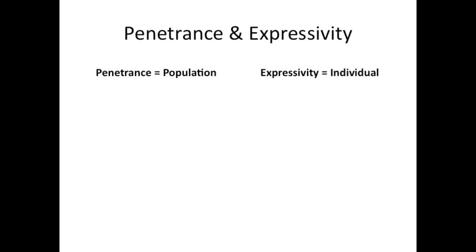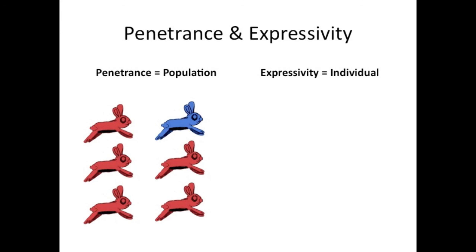Finally, we have penetrance and expressivity — think about both as to what extent genes are expressed in the phenotype. Penetrance is for the population (two P's — nice mnemonic), while expressivity is for the individual. For penetrance, the question is: if the bunny has the gene for red, is it actually red? In this example, all bunnies have the gene for red, but only five-sixths are expressing it — therefore the gene is about 83% penetrant. Genetic disorders in humans are classified this way; if all individuals who have the gene show the disorder, it is said to be fully penetrant.